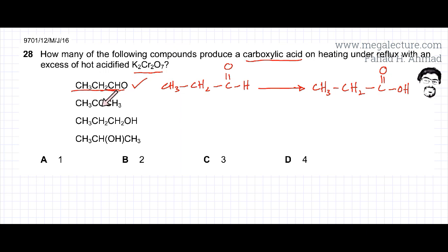The second one is a ketone: CH3COCH3. CO is in the middle. Here's the structure: CH3, C2, and CH3. It's a ketone. Ketones don't undergo any oxidation, so this is not going to get oxidized by K2Cr2O7. They're resistant to oxidation.